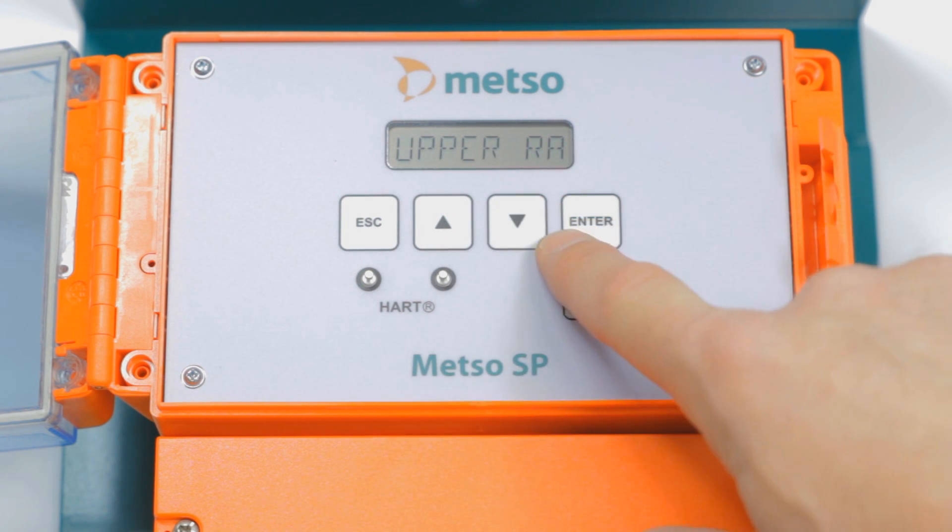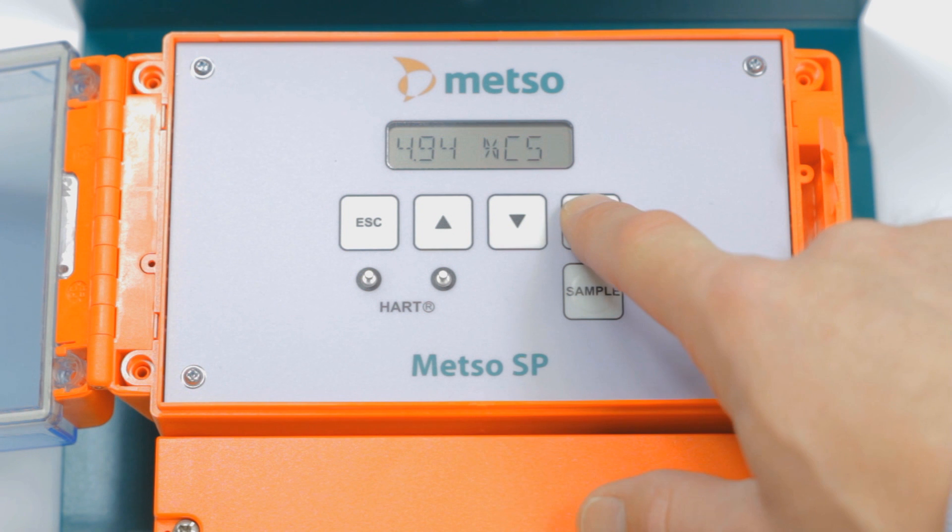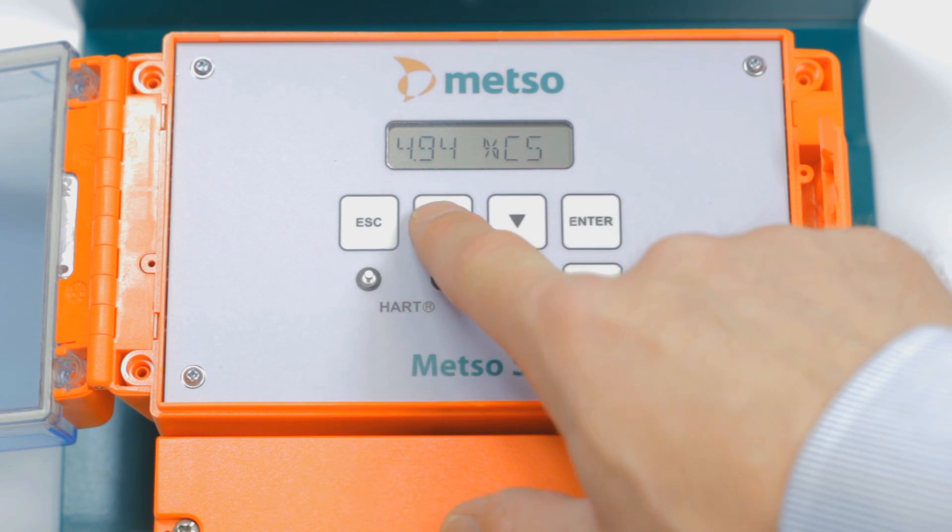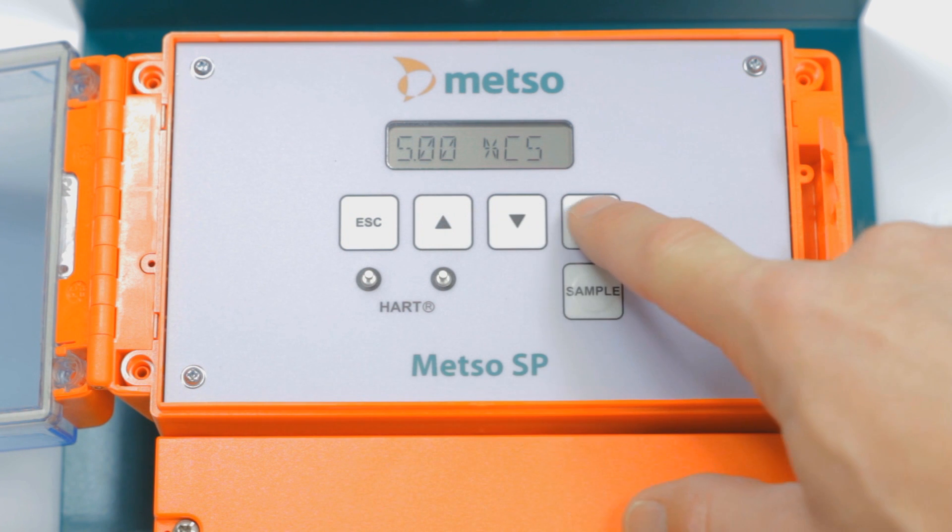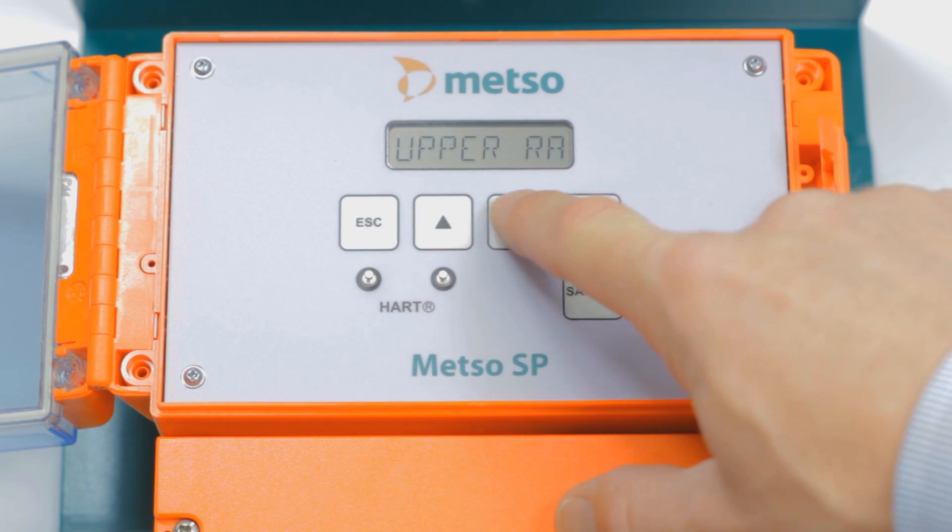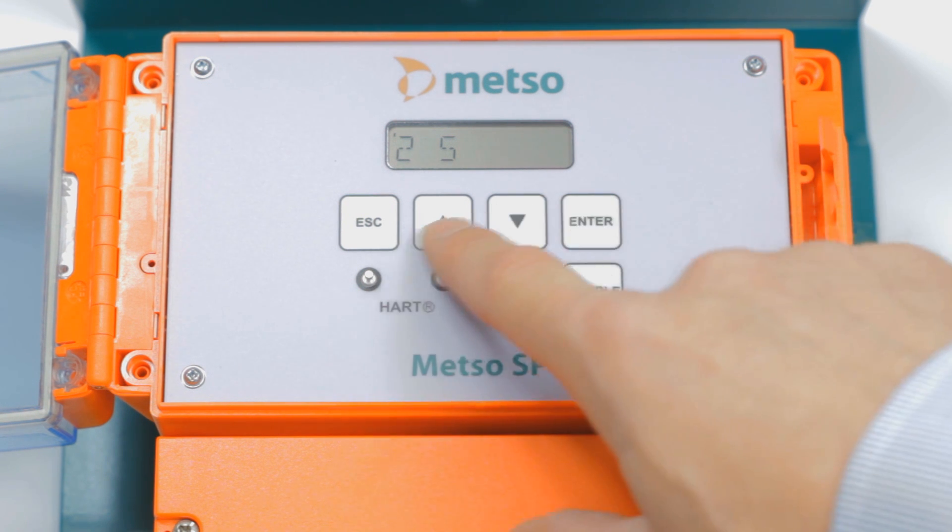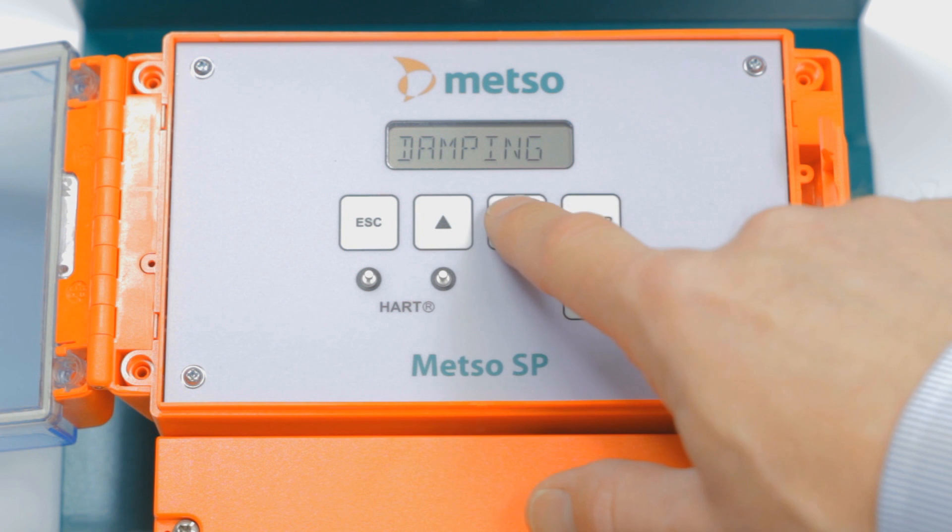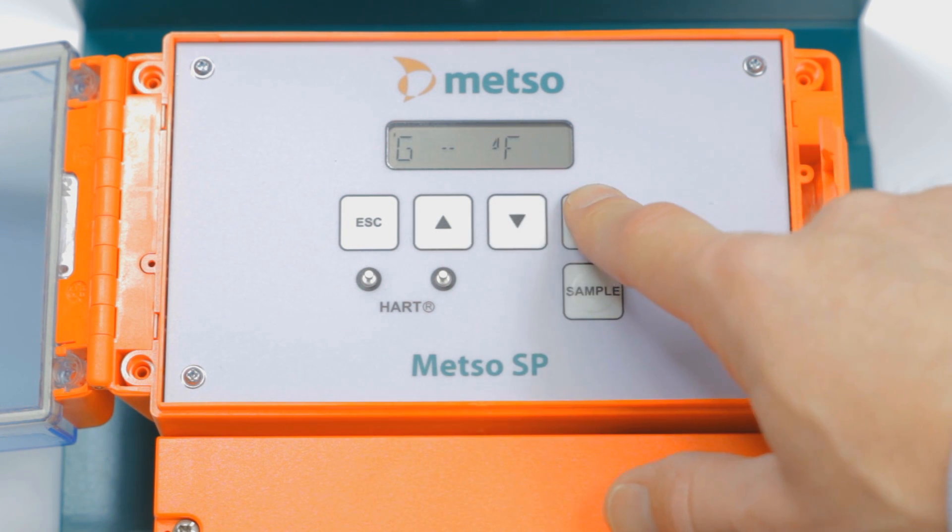And then we're going to arrow down to the upper range. And we want that at 5.00, so we're going to bring that up and hit enter and accept that. We can arrow down. Dampening, default is 2 seconds. We can enter to accept it. Language, English, units, grams, and Fahrenheit. We're going to accept that.